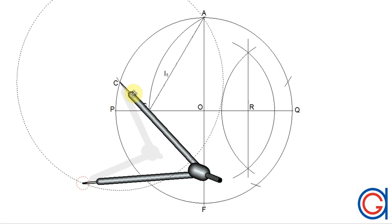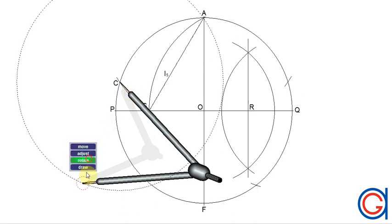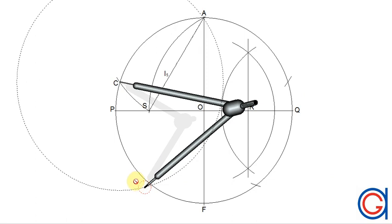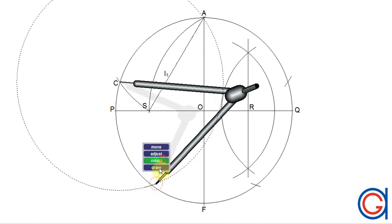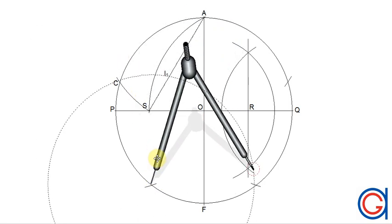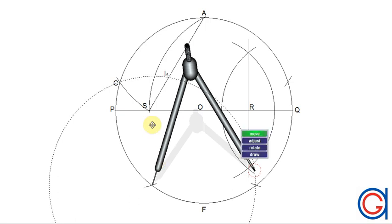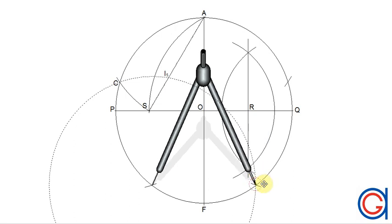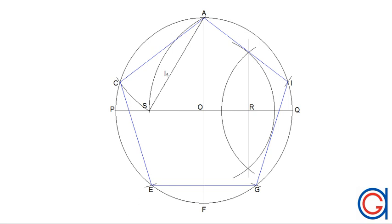Now setting our compass on point C, our previously drawn arc, we scribe another arc below, as can be seen here. If we are doing everything with precision and accuracy, our final arc should fit exactly as you can see here in the video. We will name these points L, E, G, and C, as can be seen here.